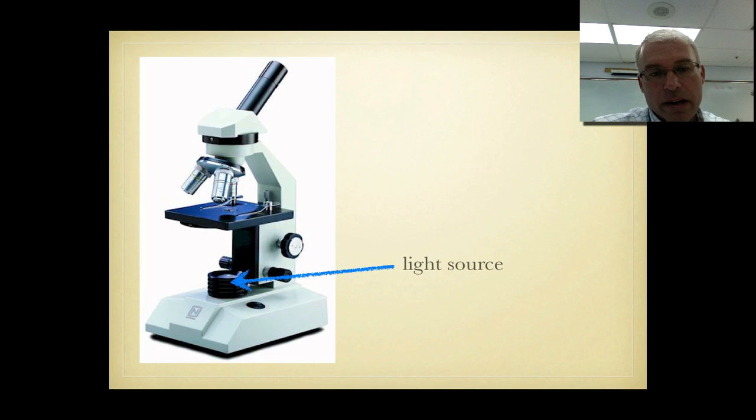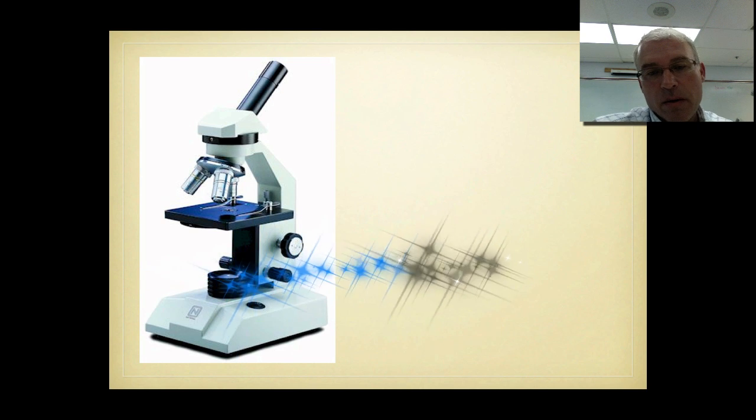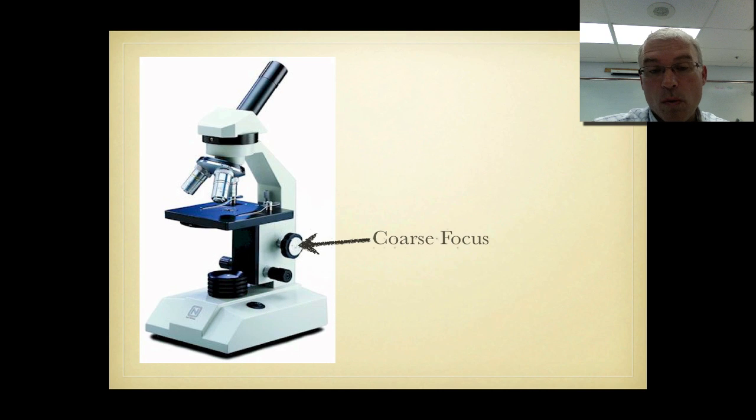Our next compound light microscope part is the light source which in our class are going to be either fluorescent light bulbs or very small little flashlight type light bulbs. They all get warm over time so you have to be careful after the microscope's been running for a few minutes when you pick it up because the base of the microscope is going to be warm.